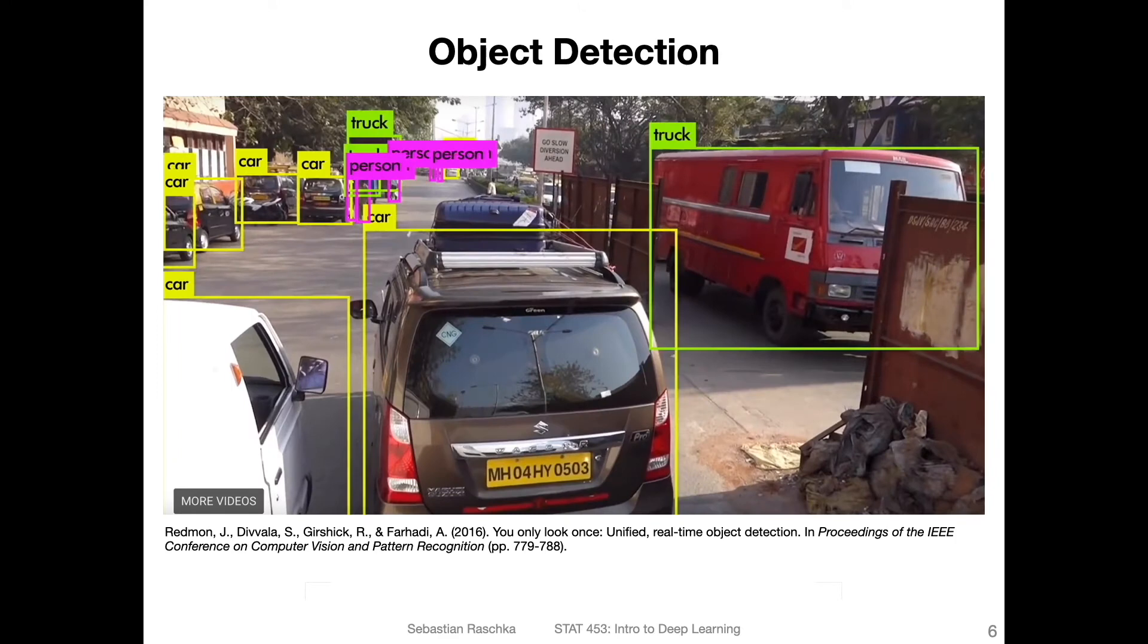Another common application of CNNs next to regular classification is object detection. This is like a mix between classification and object detection, because usually you predict a bounding box, but you also predict a class label corresponding to the bounding box. So you have essentially two tasks. One is identifying objects, for instance here a car, another car, but then also assigning the class label to it. The network essentially learns how to draw these boxes.